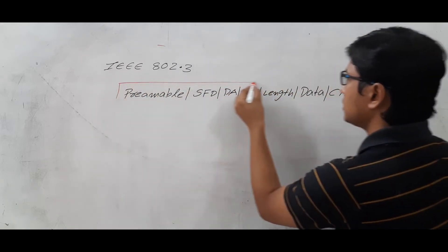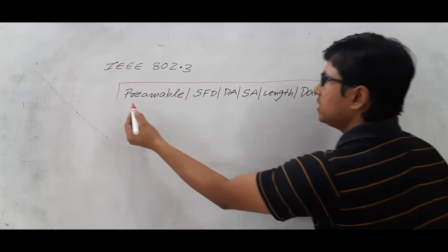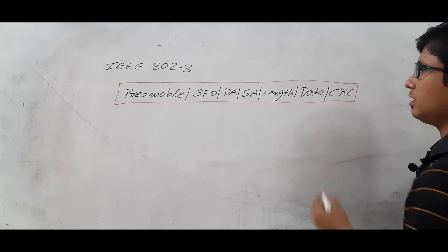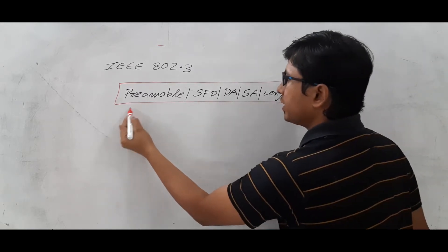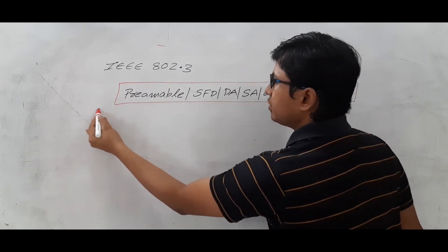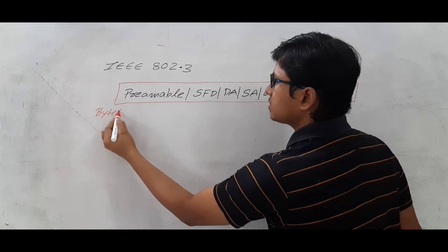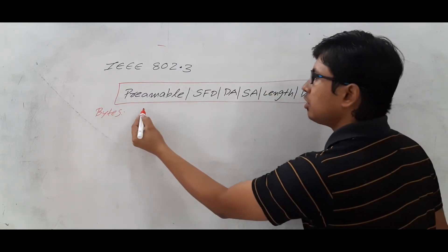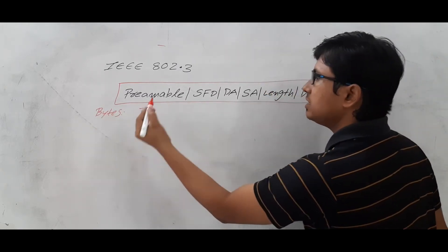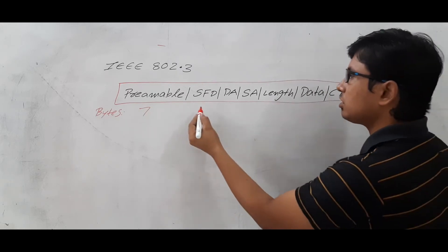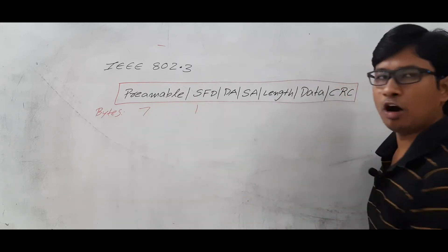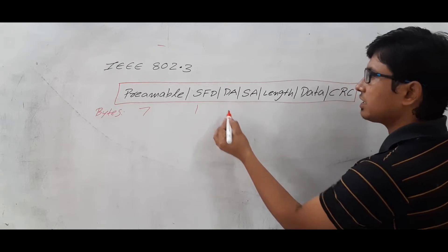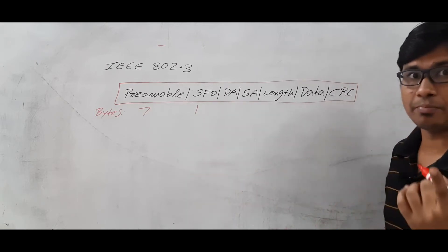Let me discuss how many bytes each field will occupy. I will mention everything in terms of bytes so you don't get confused. The preamble will occupy seven bytes and the start of the frame delimiter will occupy one byte. And the destination address, as it is a MAC address —